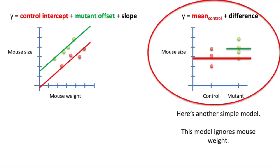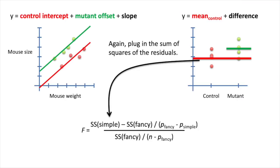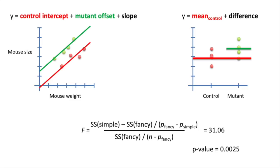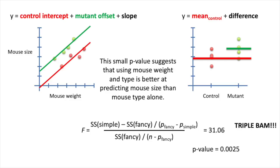Here's another simple model — just a normal t-test, which ignores mouse weight. Again, we plug in the sum of squares of the residuals. The equation has two parameters, so p-simple equals 2. That gives us a p-value equal to 0.0025. Oh my gosh — it's the coveted triple BAM! This small p-value suggests that using mouse weight and type together is better at predicting mouse size than mouse type alone. So you can see that the question you want to ask determines what type of simple model you want to compare your fancy model to.